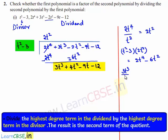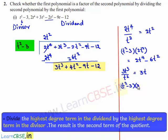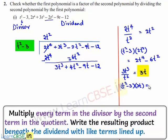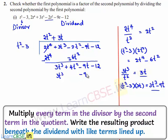When 3t³ is divided by t², we get 3t. So t² minus 3 multiplied by 3t gives 3t³ minus 9t. So 3t can be written at the place of the quotient, and this multiplication product, 3t³ minus 9t, can be written here.